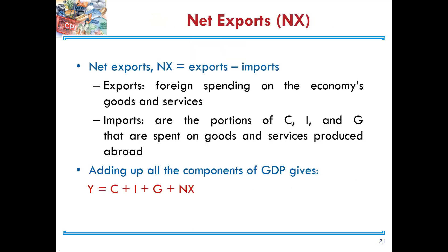Net exports represents the difference between the value of exports and the value of imports. Exports represent foreign spending on the economy's goods and services. Imports represent the portion of consumption, investment, and government purchases that are spent on goods and services produced abroad. When we add all four components, we arrive at GDP.